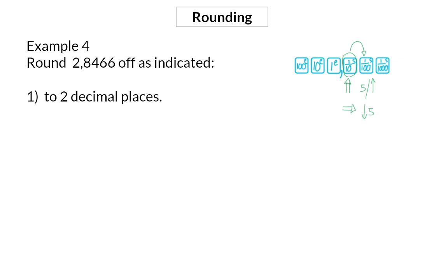So let's have a look at example 4. Firstly, we need to round to two decimal places. For this, we're going to focus on the third decimal in the number that we were given, and that is a 6. This value is bigger than 5, which means that the 4 in front of it — our second decimal — has to increase as well. And that becomes 2,85.